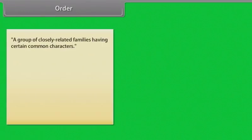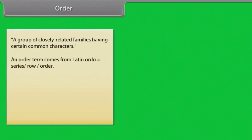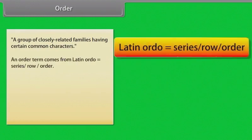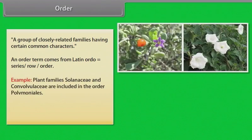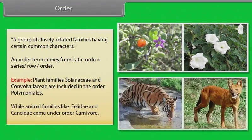An order is a group of closely related families having certain common characters. The term order comes from Latin ordo, meaning series or row. For example, plant families Solanaceae and Convolvulaceae are included in the order Polemoniales, while animal families like Felidae and Canidae come under the order Carnivora.